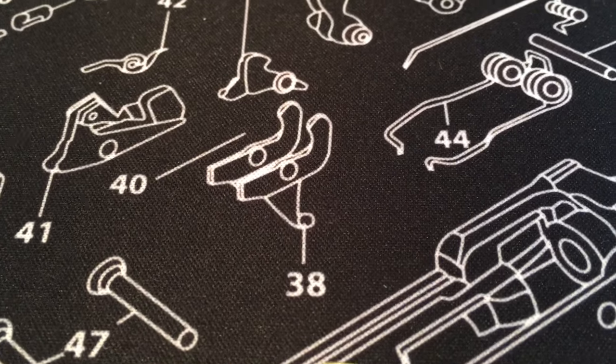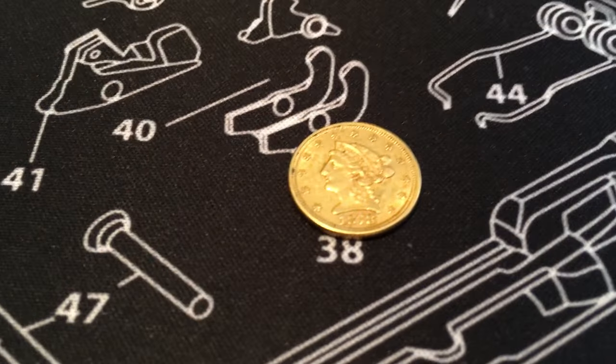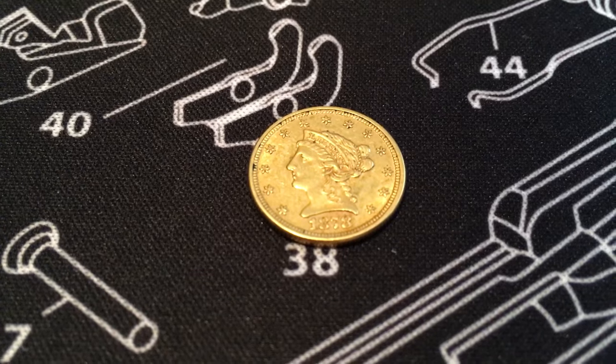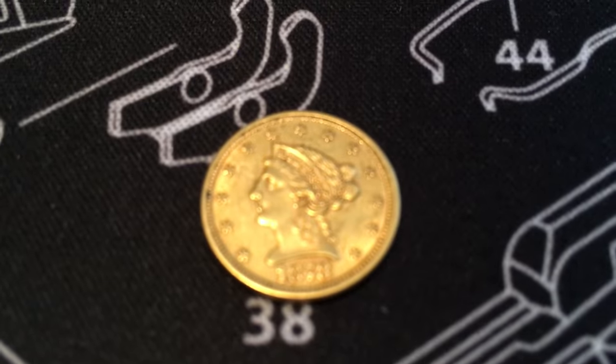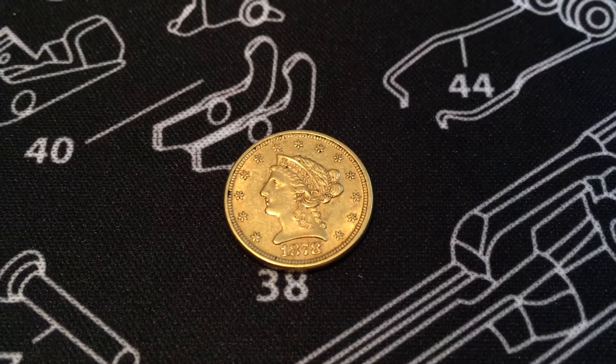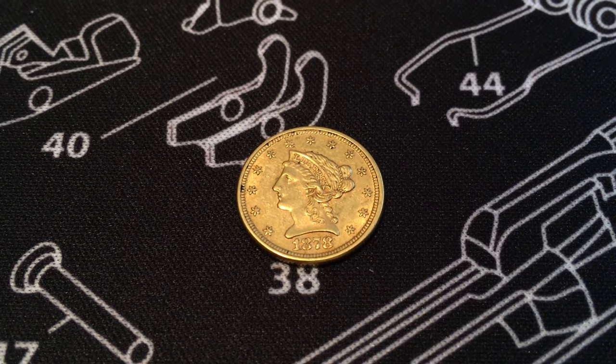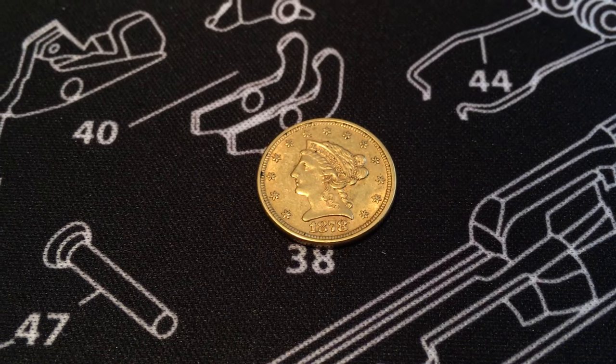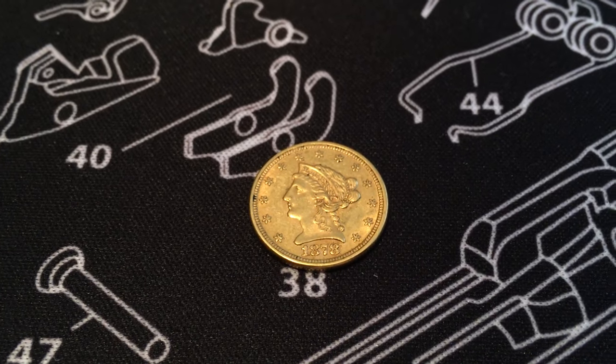Up first is this little guy, a $2.50 pre-33 gold. Let's see if we can get the year on that - 1878, that's right. So we got one of those, supposed to be in AU condition.